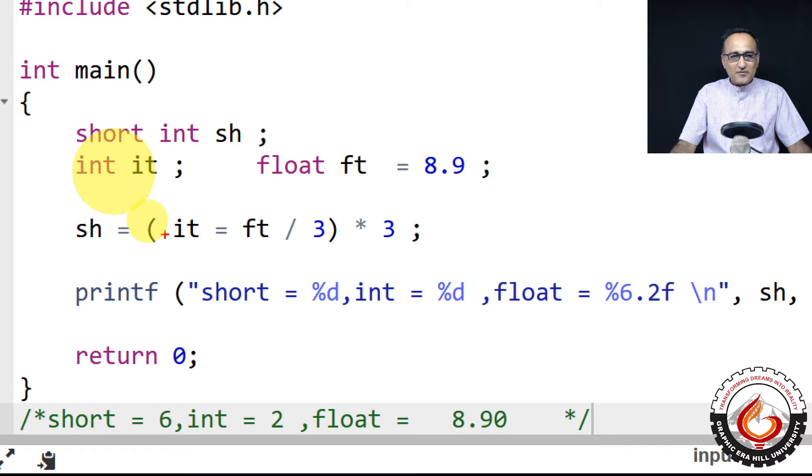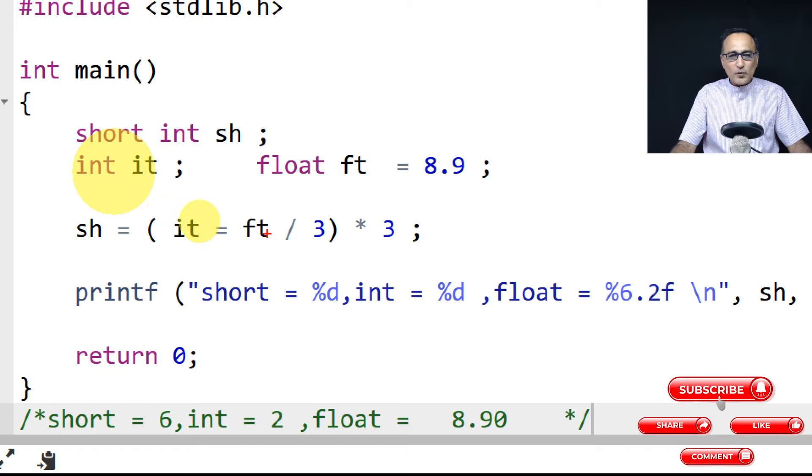Now the result of this bracket, this entire thing, happens to be 2. Float value doesn't change. So 2 into 3 is going to be 6. So short is going to have the value of 6.